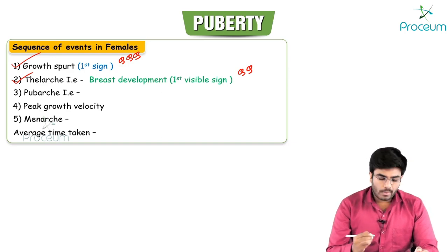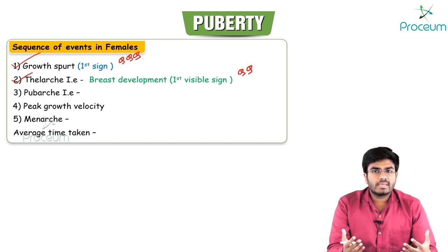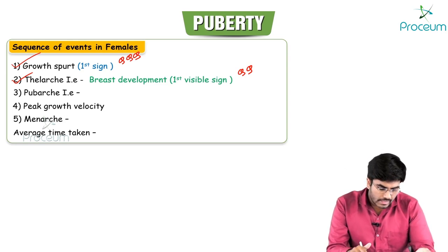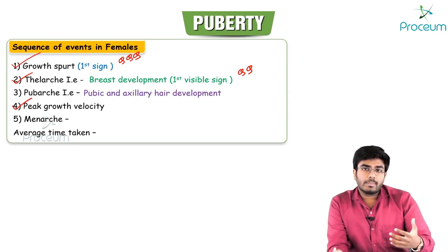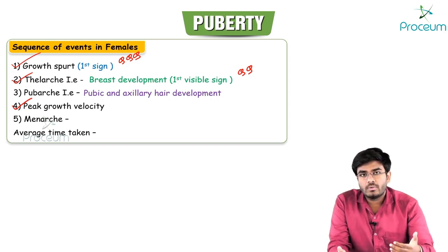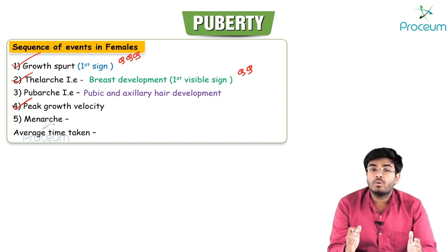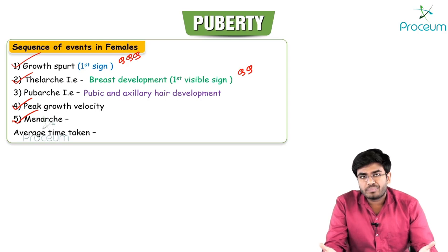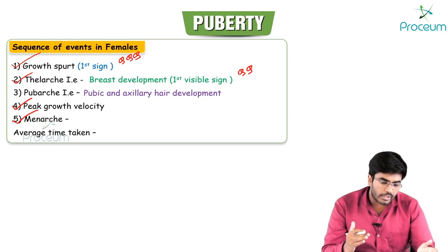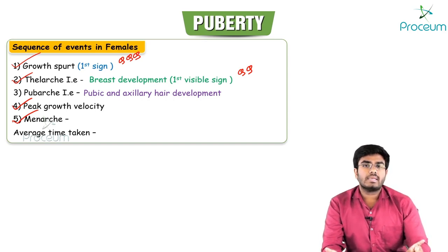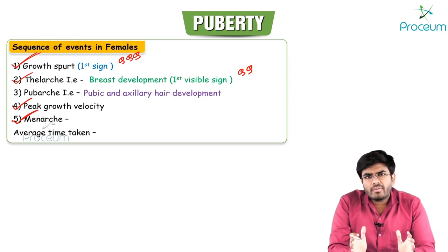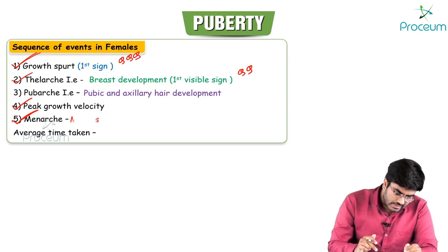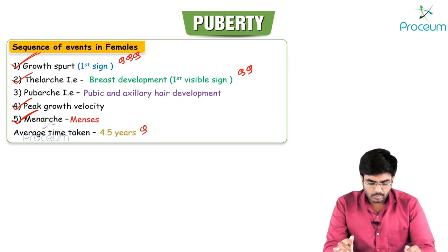After thelarche there is pubarche — development of pubic hair and axillary hair. This is followed by peak growth velocity, where she starts to grow much faster with increased linear height. The last event is menarche. From growth spurt to menarche, all five events take on average 4.5 years.